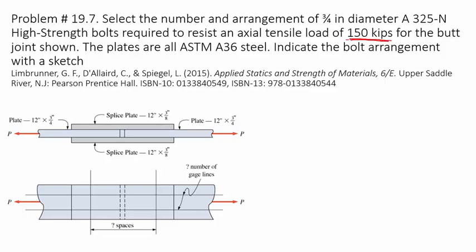To carry this 150,000 pounds, how many bolts do you need? Step number one in connection design or connection problem calculation is to check for the weak bolt. So if the bolt is weak, then it will be cut off by the plate.